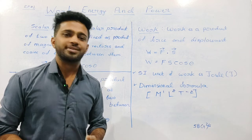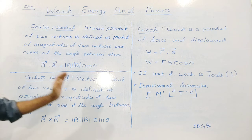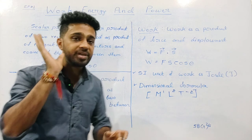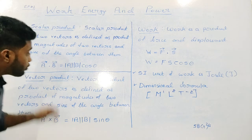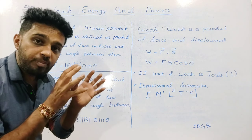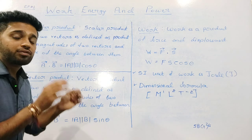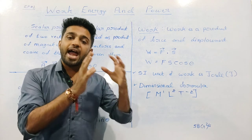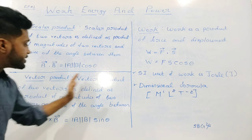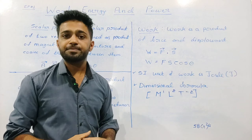Next is the Vector Product. The definition: Vector Product of two vectors is defined as the product of magnitudes of two vectors and the sine of the angle between them. So for vectors A and B, the cross product — Vector A cross Vector B — is equal to mod A into mod B into sin theta, where theta is the angle between Vector A and Vector B. That is the mathematical form of the Vector Product, also called the cross product.